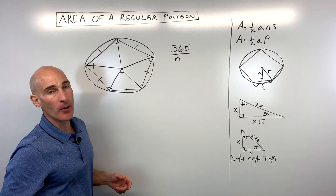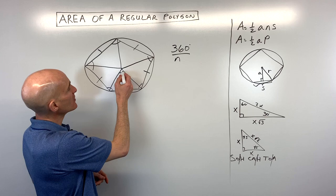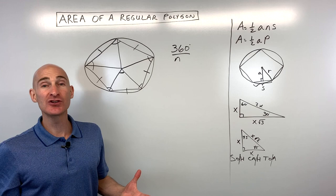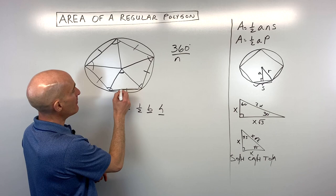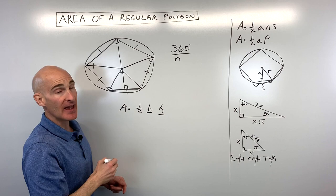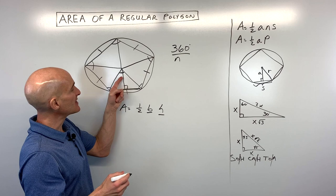If we know that all these triangles are congruent, we can find the area of one of these triangles, multiply by how many we have, and that gives us the total area of the regular polygon. The formula for area of a triangle is one-half base times height. In a regular polygon, we call the perpendicular distance from the center to the side the apothem, and we use the letter A for it.